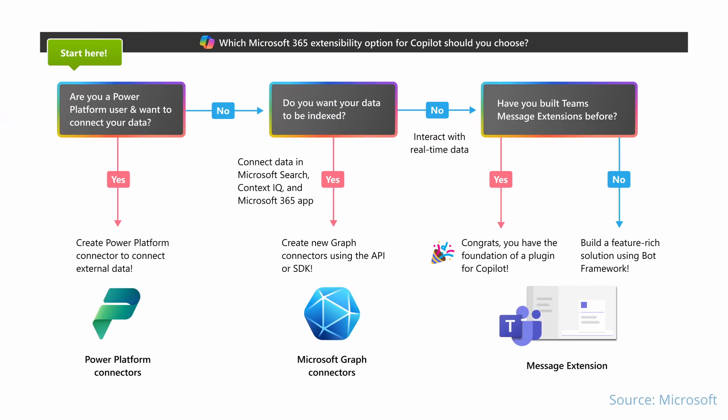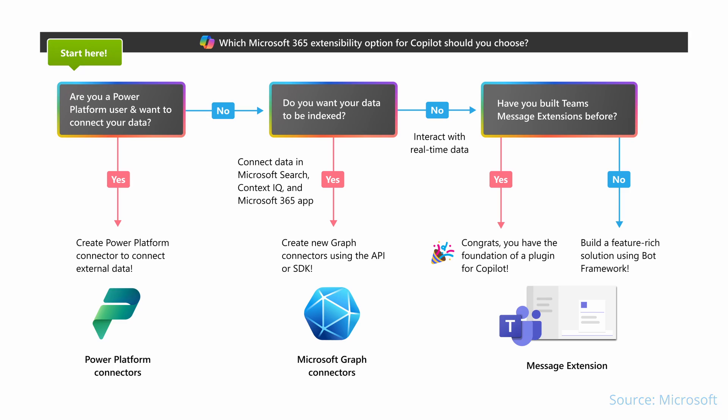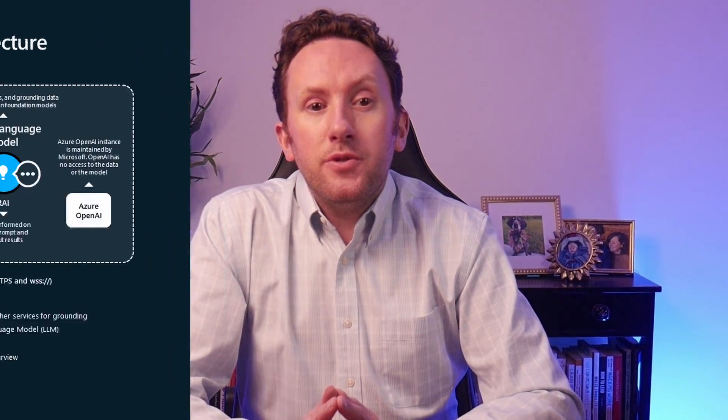On top of this index based on graph data, Copilot's reach is extendable using a range of extensibility options, including graph connectors that extend that graph index and plug-ins that range from Teams messaging extensions to Power Platform connectors. Right now, much of this extensibility ecosystem is in preview, but look out for another video digging into this issue soon.